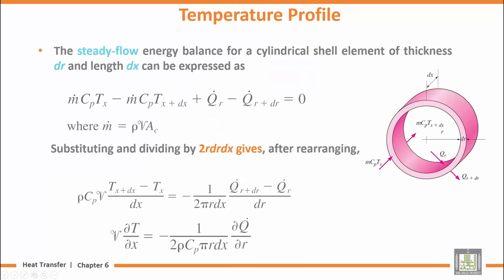If we want to see the temperature profile, we can use the energy balance. We want the cross-sectional area AC, which equals delta x. We know that mass flow rate times energy is called x.